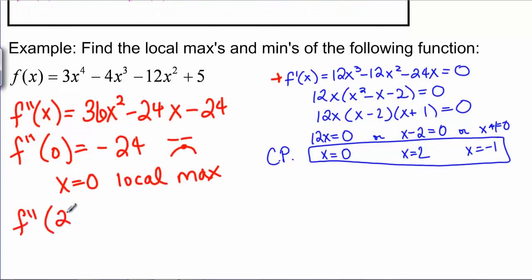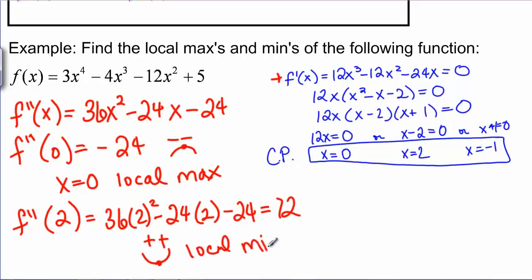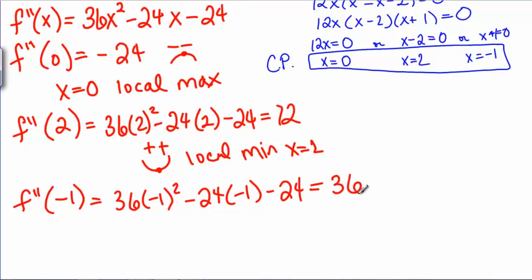Plugging two into the second derivative: 36 times two squared minus 24 times two minus 24 equals 72. This is positive, so a positive second derivative means we have a smiley face — a local min at X equals two. Now F double prime of negative one gives us 36 times negative one squared minus 24 times negative one minus 24, which equals 36, also positive. Again we have a smiley face, so we have a local min at X equals negative one.